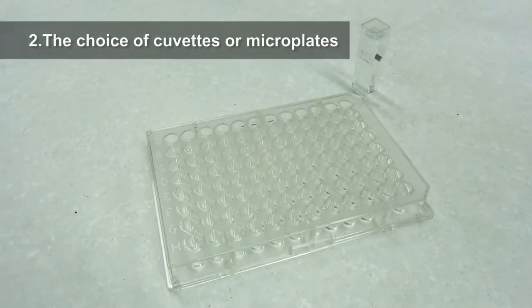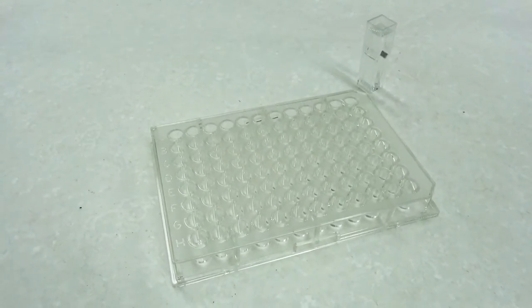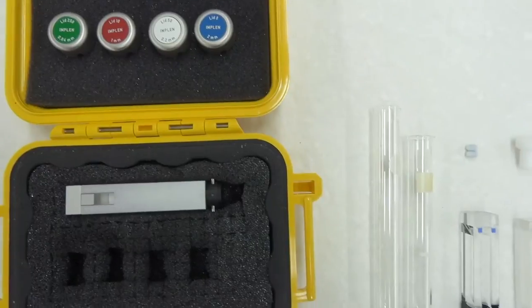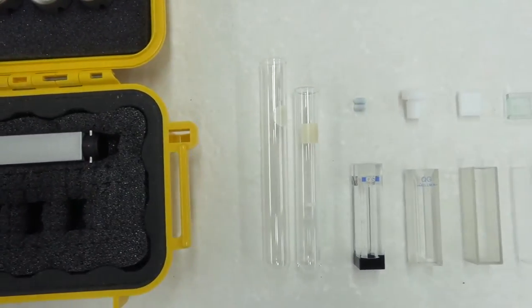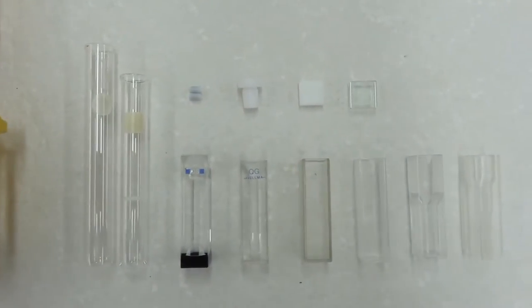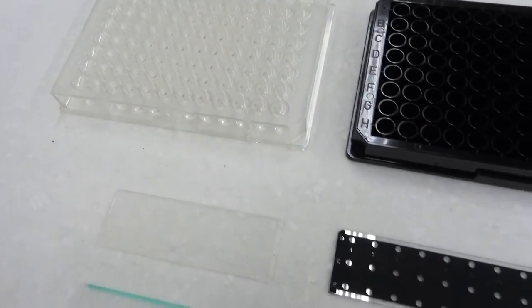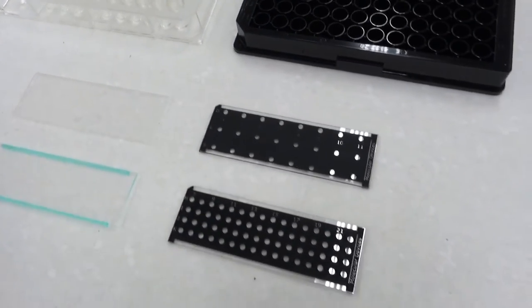2. The choice of cuvettes or microplates. Depending on the kind and volume of the sample to be measured by a spectrophotometer, different types of cuvettes or microplates made of different materials and with different appearances should be used.